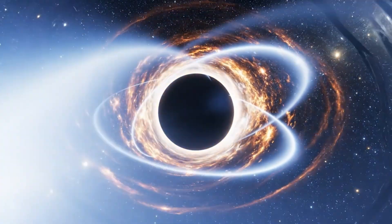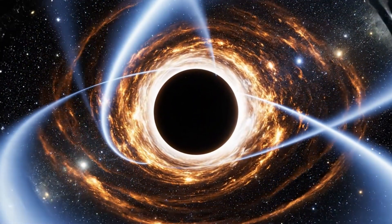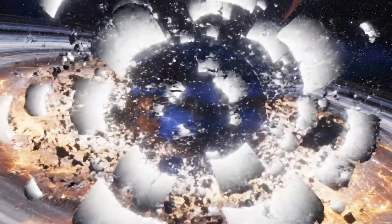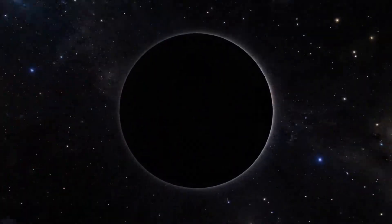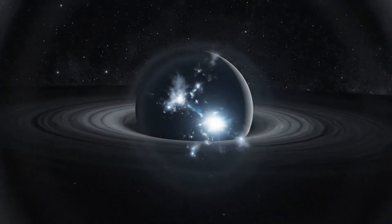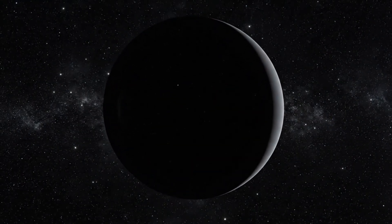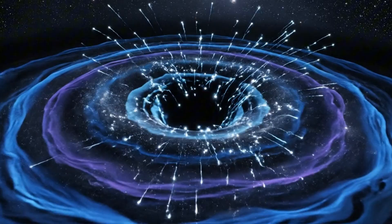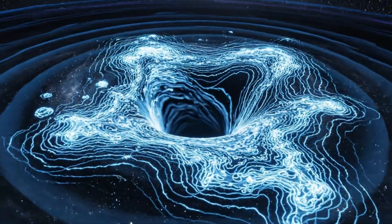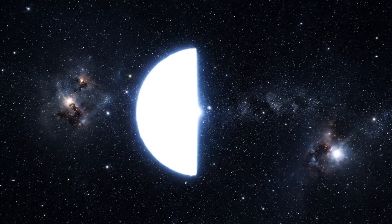Near the event horizon of TON 618, time begins to lose its meaning because a single second spent at that boundary could stretch into years for anyone watching from a safe distance. To an outside observer, you would appear frozen at the edge of eternity, suspended in a moment that never seems to pass. Light suffers its own torment there, as gravitational redshift drags every color toward a deep blood red, as if the black hole were draining the universe of its palette one shade at a time.